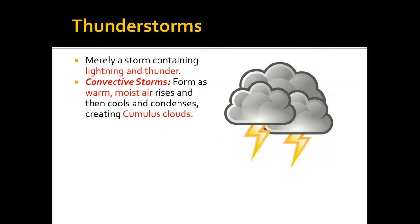How does this relate to stability? In an unstable atmosphere, air is able to rise, producing thunderstorms. However, if the atmosphere is stable, air can't rise and you wouldn't get thunderstorms. The stability of the atmosphere can actually be the difference between a nice sunny day and a severe thunderstorm outbreak — that's one of the reasons why we care so much about stability.